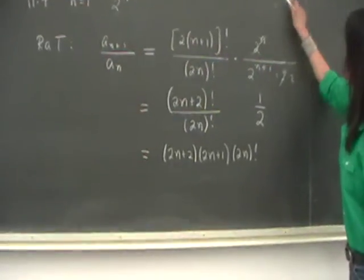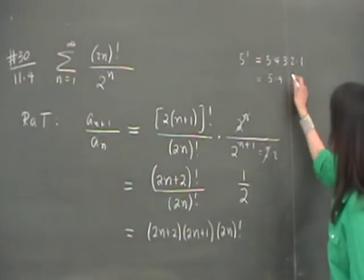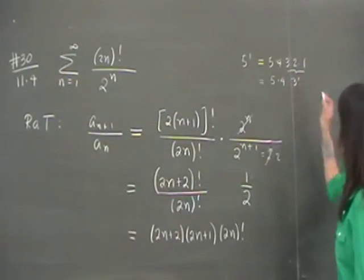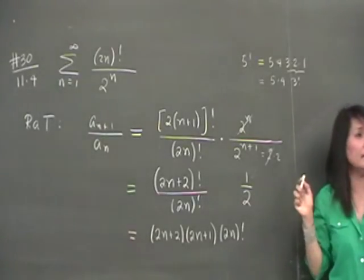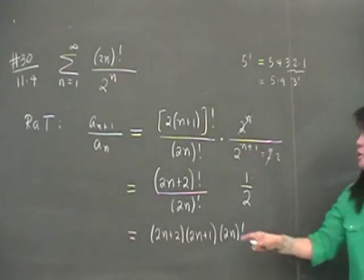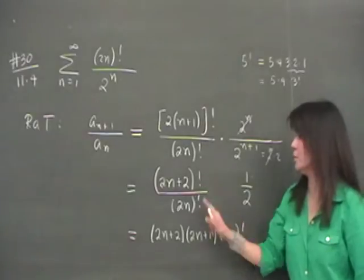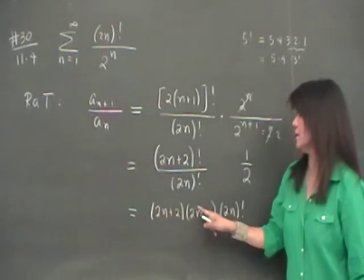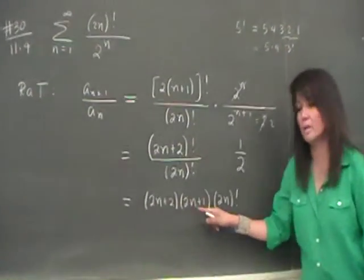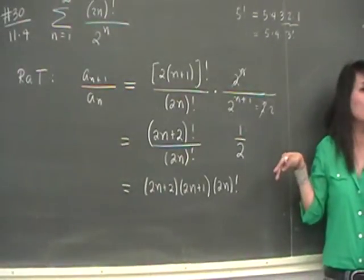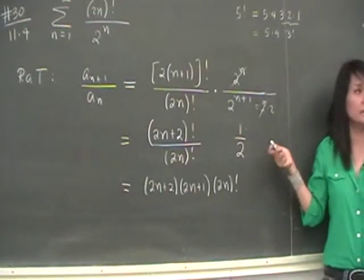Like going back here, 5 factorial is really the same as 5 times 4 times 3 factorial. So 2n plus 2 factorial is 2n plus 2 times 2n plus 1, and all the rest will just be the quantity 2n factorial. You get that? And so we don't have to mess with this. You can just leave it alone.